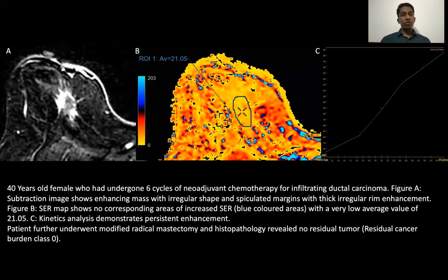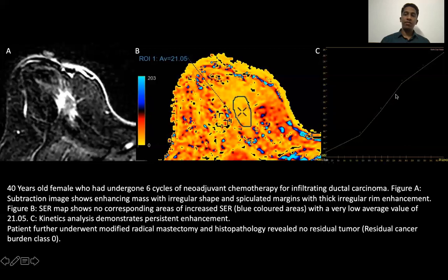Case 2: A 40-year-old female who had also undergone six cycles of neoadjuvant chemotherapy for infiltrating ductal carcinoma. The subtraction image shows a heterogeneously enhancing mass lesion with irregular shape and spiculated margins. The SER map shows no corresponding areas of increased SER — no regions colored in blue — and the absolute value from a 2D ROI revealed a low SER value of 21. The corresponding kinetic analysis revealed persistent enhancement. The patient underwent modified radical mastectomy, and histopathology revealed no residual tumor.